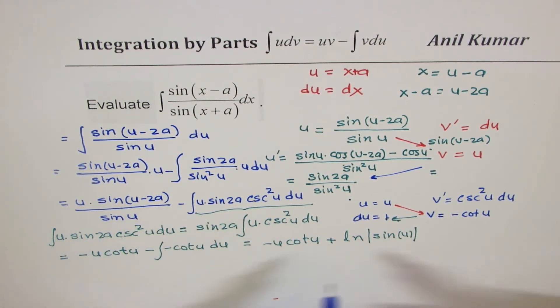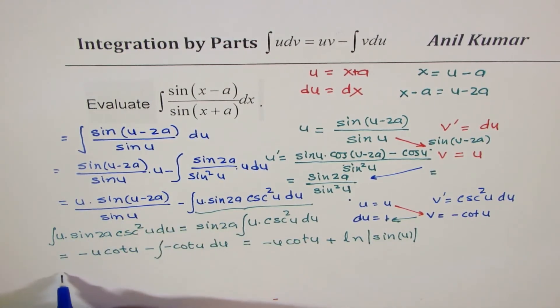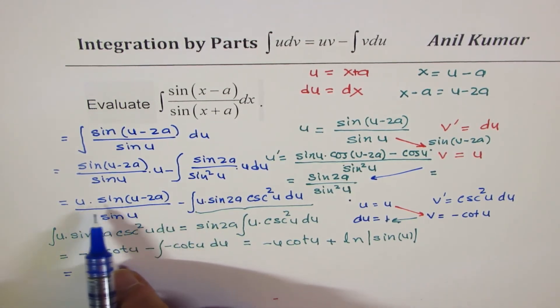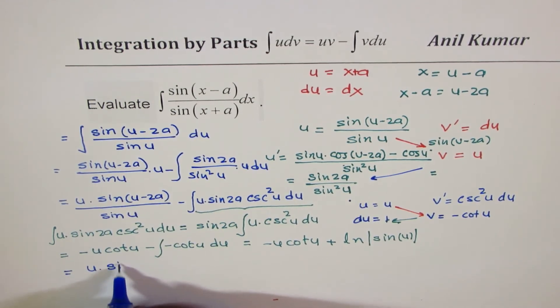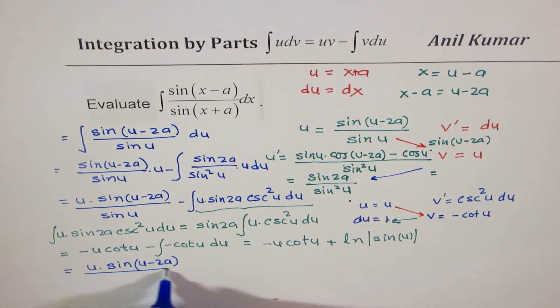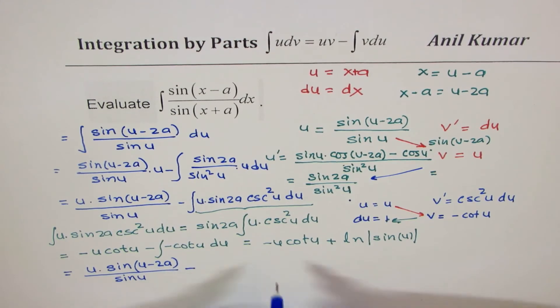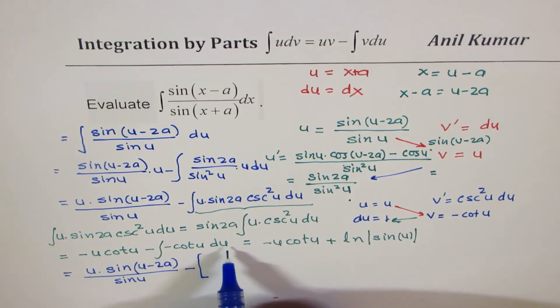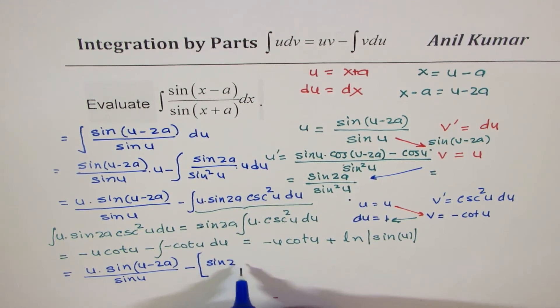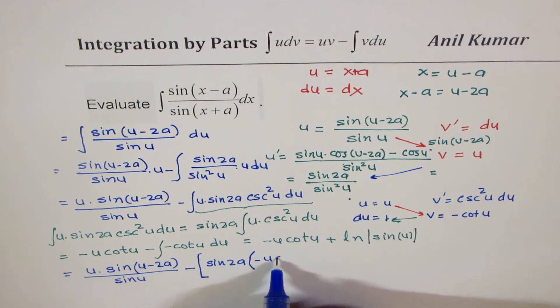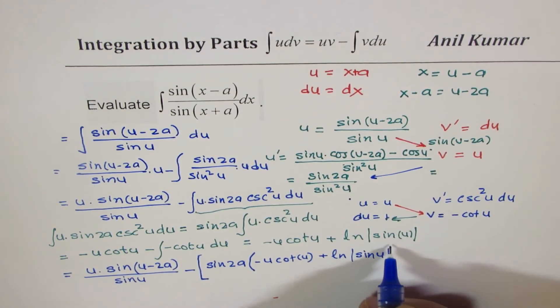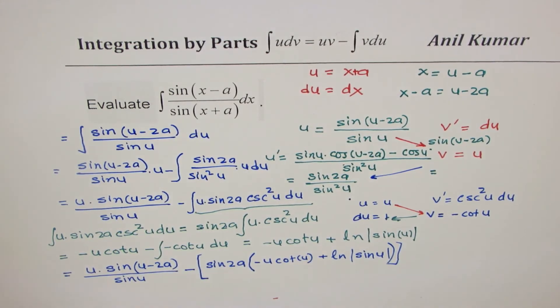And now we can continue with our solution after doing the substitution here. Our integral is equal to u·sin(u-2a) over sin(u) minus all this what we got just now. So outside we have sin(2a), and inside we get all that, which is -u·cot(u) + ln(sin(u)).